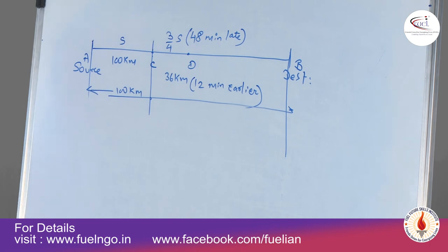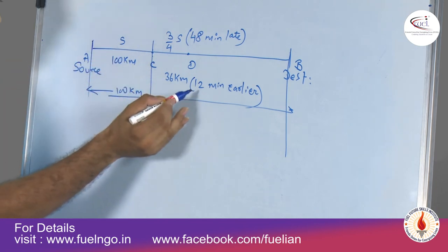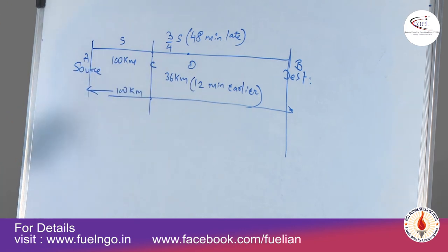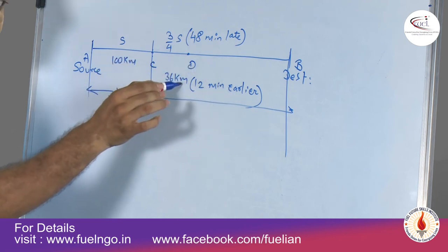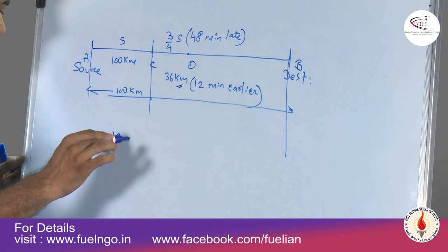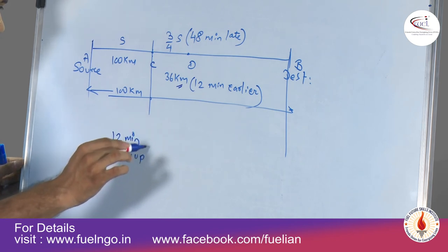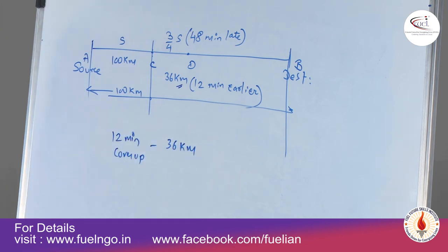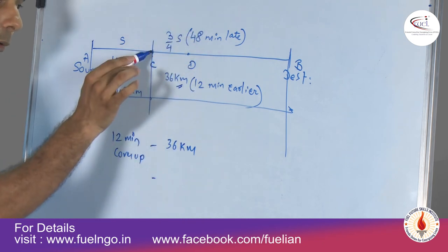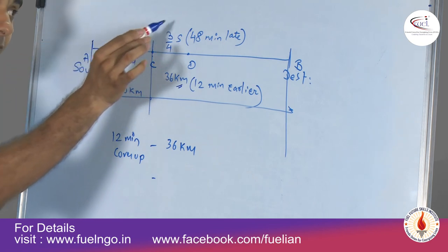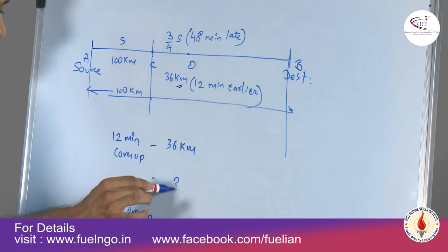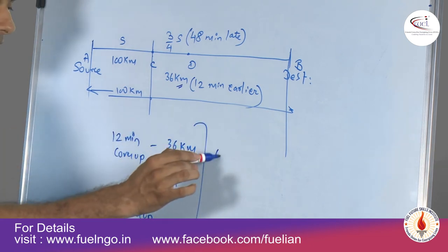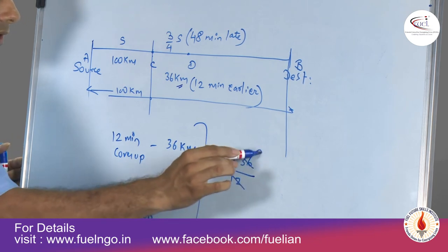Using the unitary method: to cover up 12 minutes you travel 36 kilometers. So to cover up 48 minutes, the distance required is 48 × 36 ÷ 12. This is a straightforward unitary method calculation: 48 multiplied by 36 divided by 12 equals 144 kilometers.